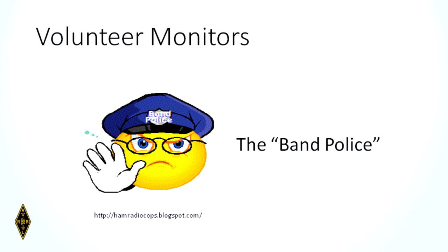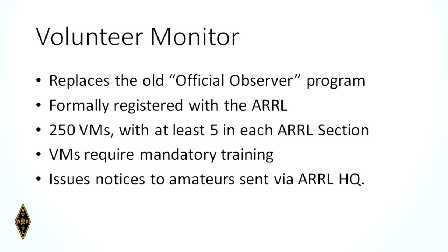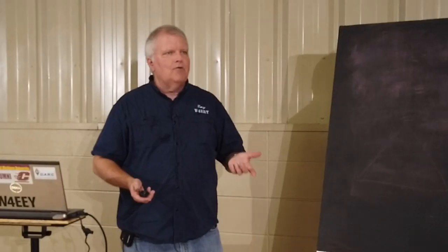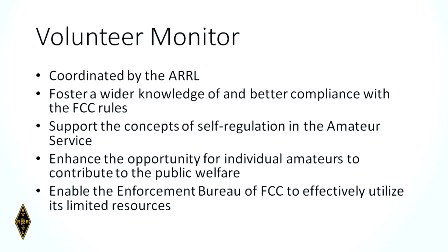This is actually new in the last year. It used to be a group called the Official Observers. Now the OOs are being phased out and the voluntary monitors are being put in their place. You must be formally registered as a volunteer monitor with the ARRL. There will be 250 of them nationwide with at least five in each ARRL section. They'll receive mandatory training and will issue notices to amateurs sent via ARRL headquarters. If they notice an error — you're operating out of band or a mode not authorized for your license — they will write it up and send it to your registered mailing address. It's coordinated by the ARRL and designed to foster wider knowledge and better compliance with the rules.